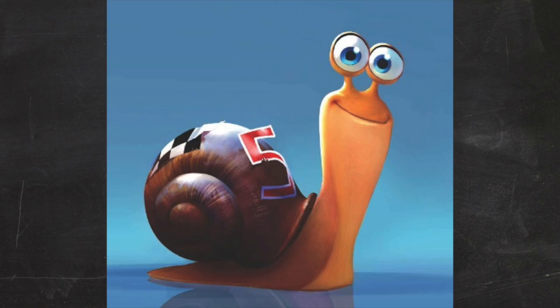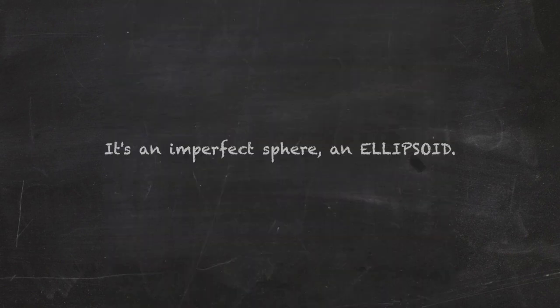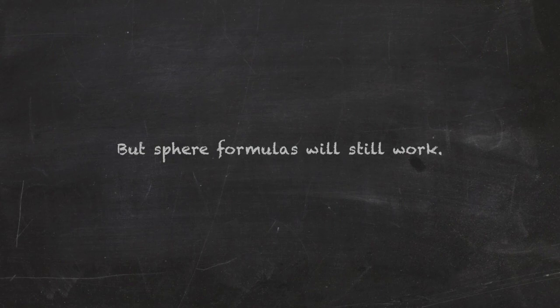Now, the volume, or the space his shell takes up. It's an imperfect sphere, an ellipsoid, but still appears to allow a sphere formula to work when evening it out.